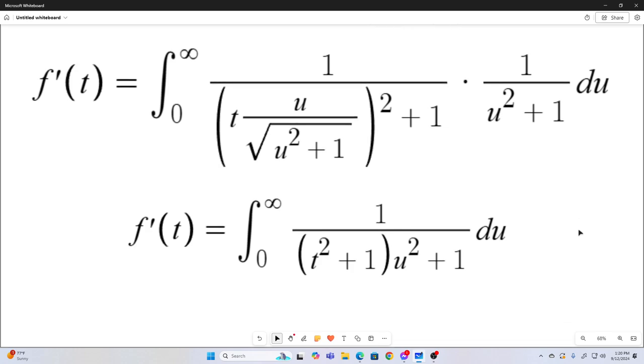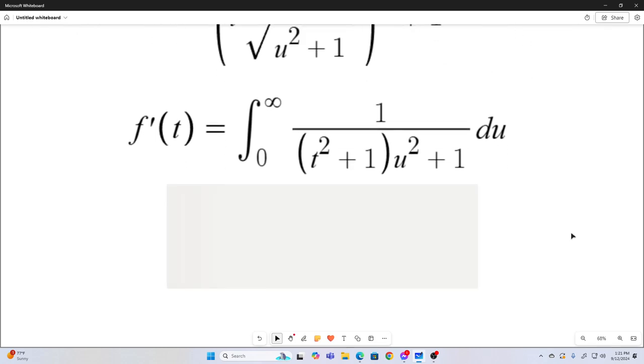And now we have an arc tangent integral right here, because in the u world, t squared plus 1 is just a constant. So we have this form. This is the generic arc tangent integral right here. And it's equal to pi over 2ab, where our a, in this case, is t squared plus 1.